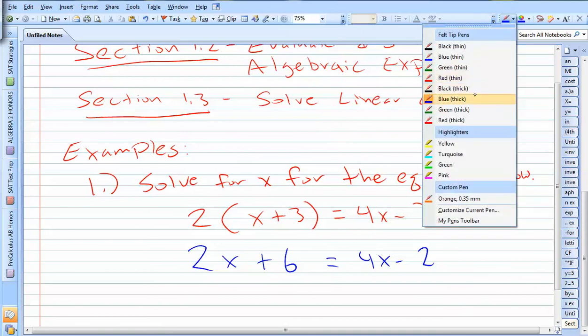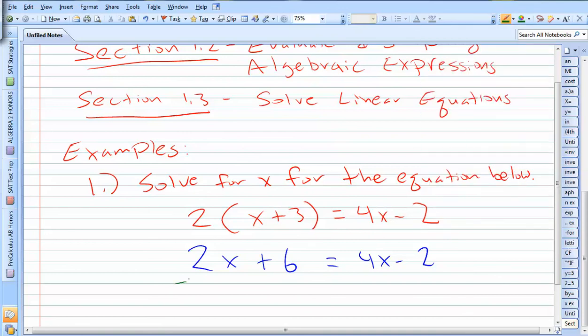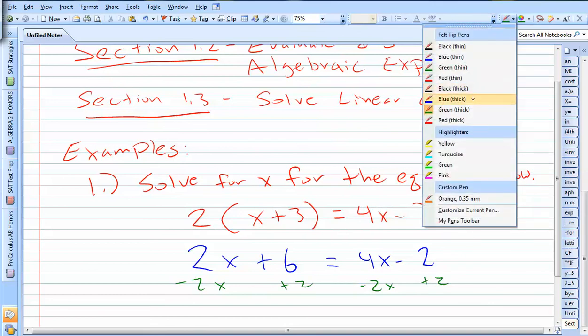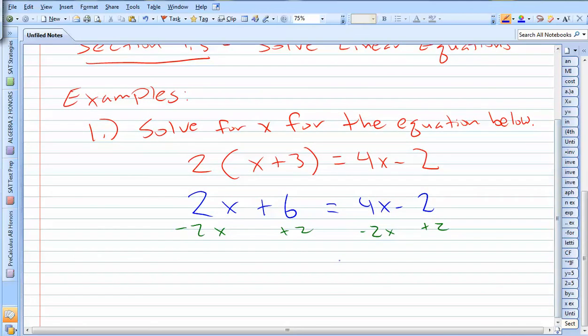Then what we want to do is combine like terms. So we'll subtract 2x from both sides, and at the same time we'll add 2. So now we've got 2x on the right side, 8 on the left side.